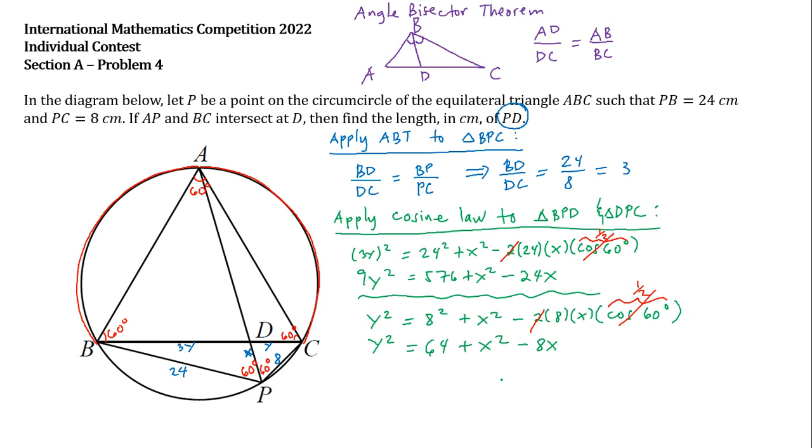So notice that in this equation, we can replace Y squared by 64 plus X squared minus 8X to arrive at an equation with only the variable X. So we have 9 times 64 plus X squared minus 8X equals 576 plus X squared minus 24X.